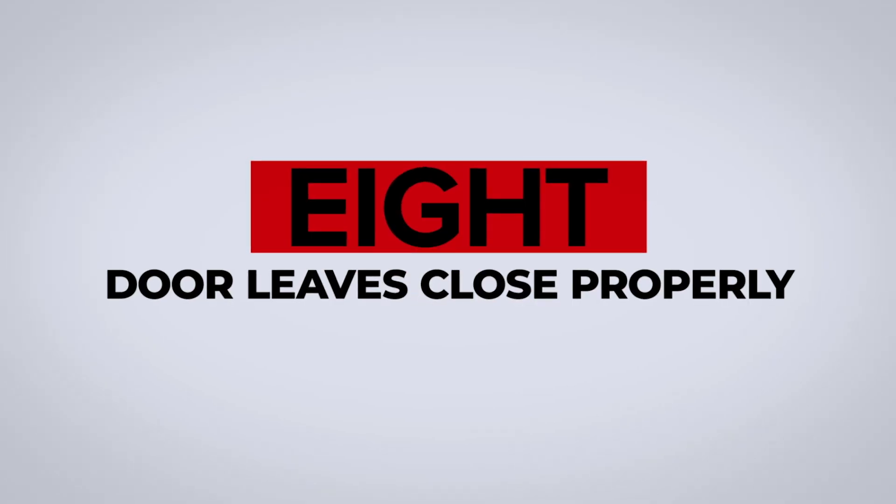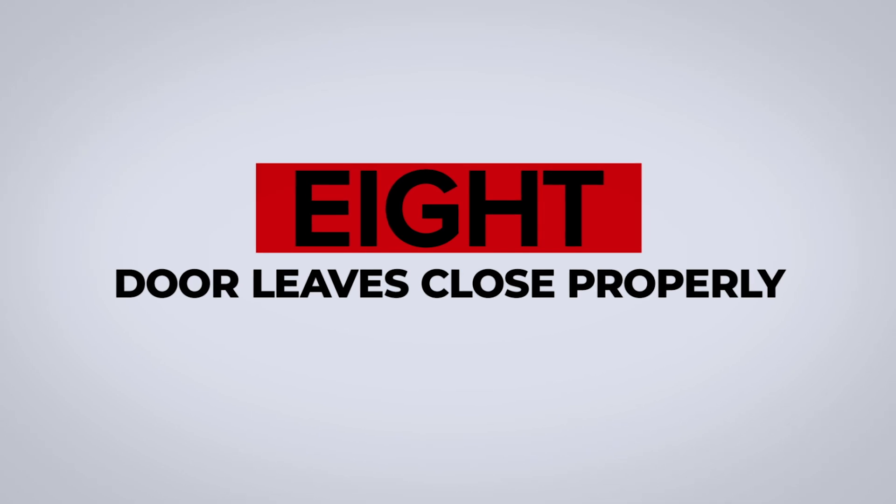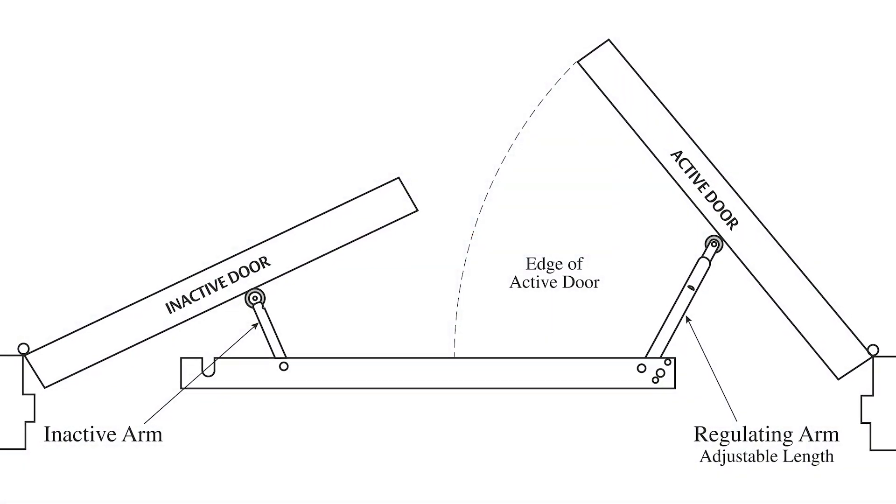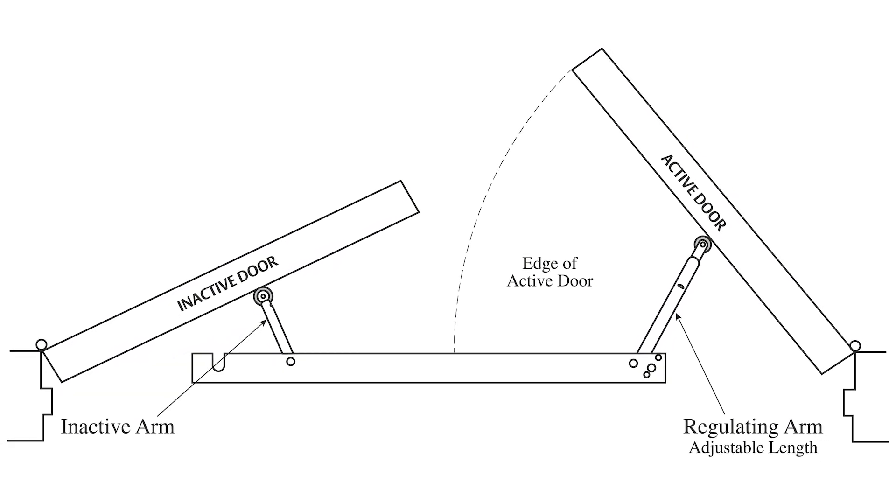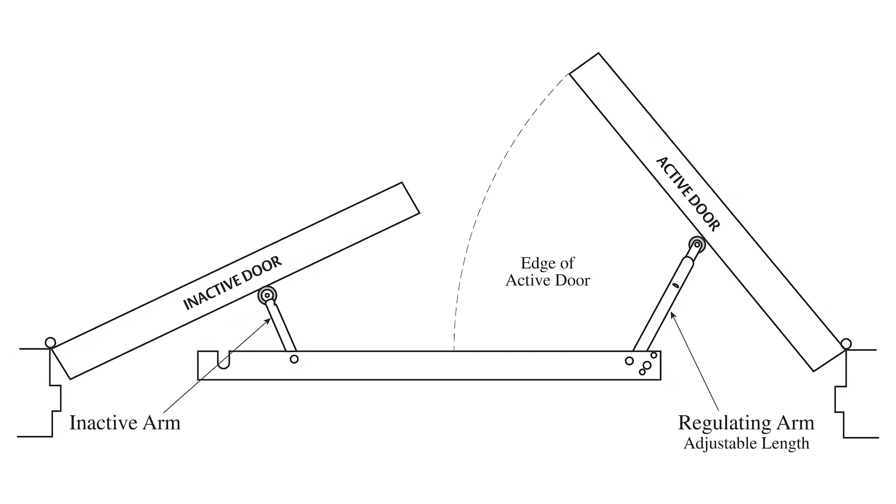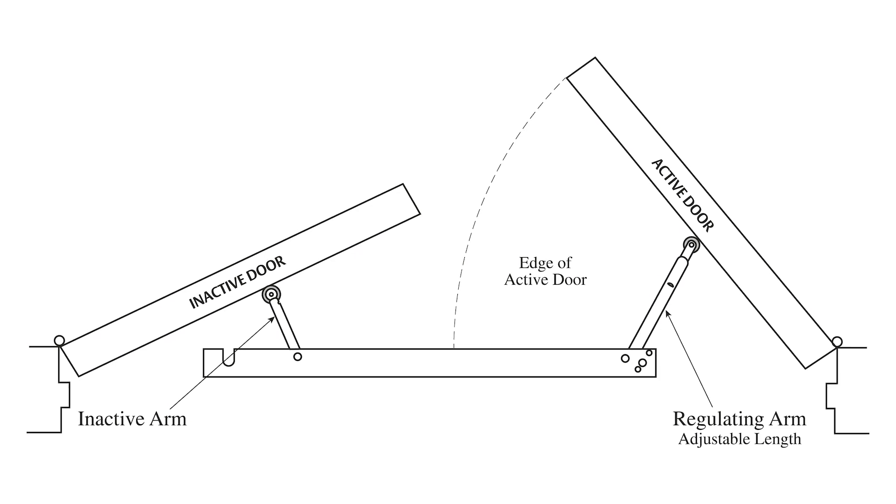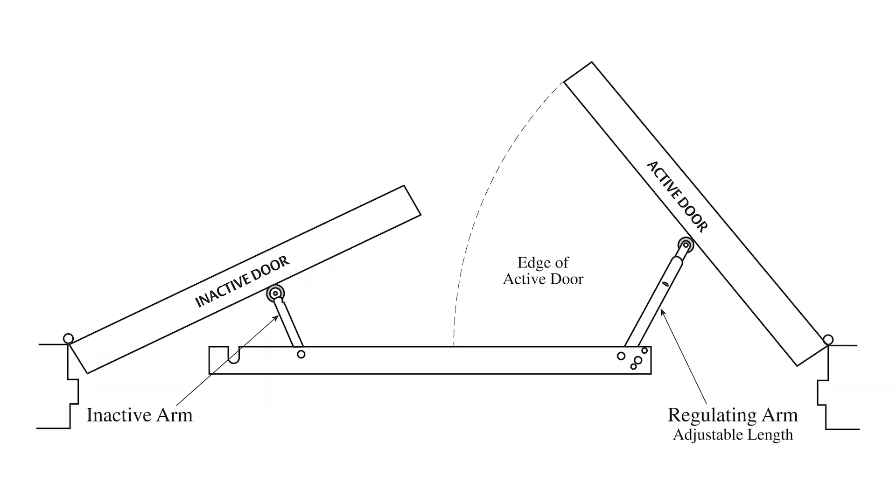Number 8: The door leaves closed in proper sequence. This only applies to pairs of doors where one leaf must close before the other. For example, when the inactive leaf is equipped with automatic flush bolts and a coordinator is used to ensure that both leaves close properly.